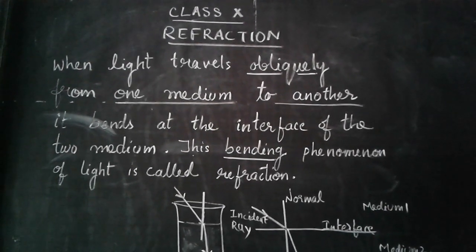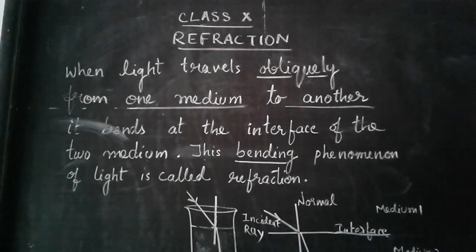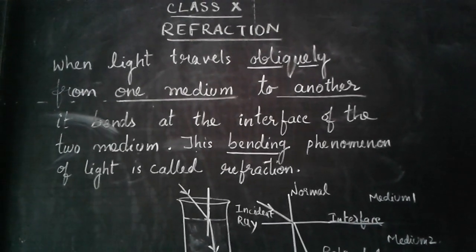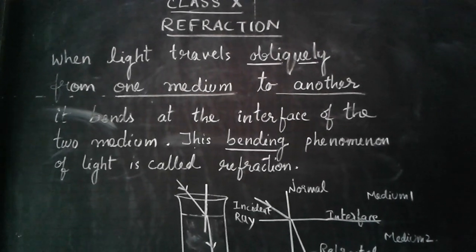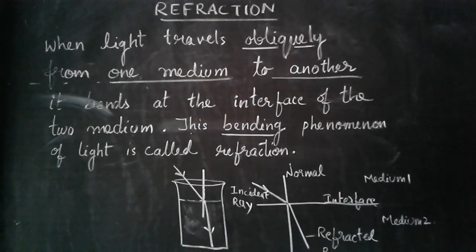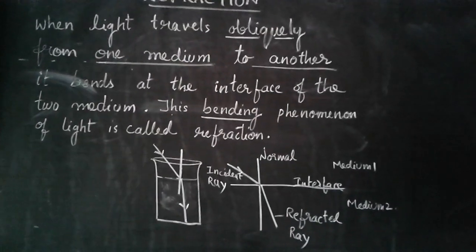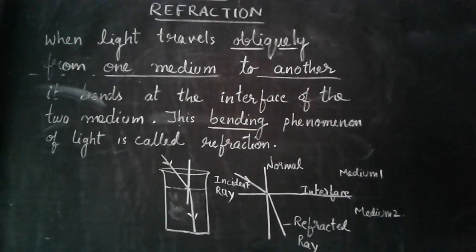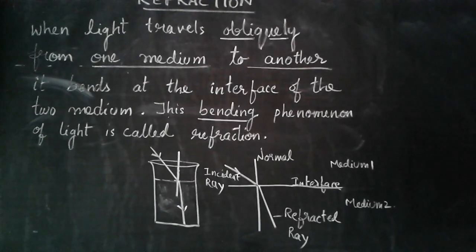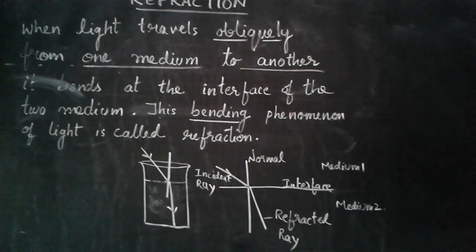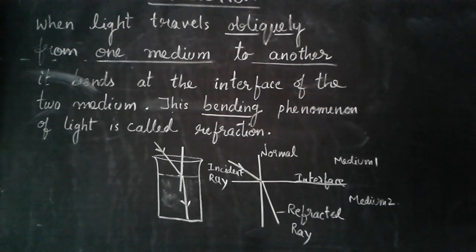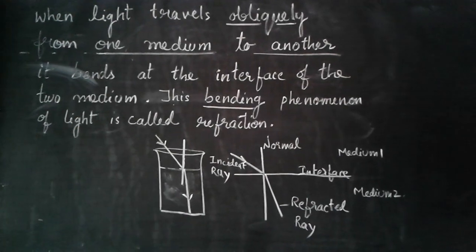Students, you can see there are a few words I have underlined: 'obliquely,' 'one medium to another,' and 'bending.' These three are the key words. Light will only bend when it is coming obliquely, the condition is that it has to pass from one medium to another, and therefore it will bend. There is a ray diagram drawn here — one part depicts the beaker and pencil we just saw, and the second is the actual ray diagram for refraction, showing two mediums, the normal, the interface, and the incident and refracted rays.